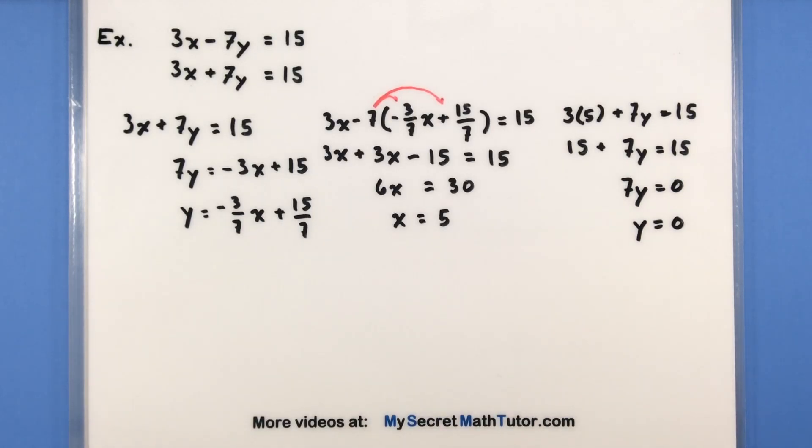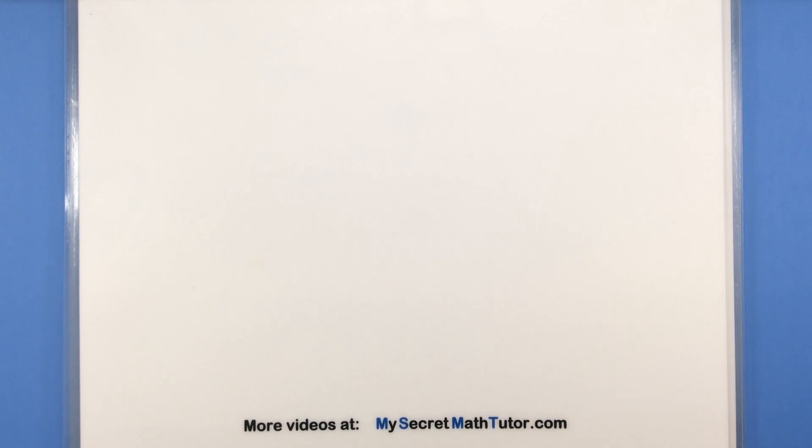As you can see, the process is nice and simple, pretty straightforward. You just have to go through the process of substituting and then solving for that remaining variable, and you should be good. If you'd like to see some more videos, please visit MySecretMathTutor.com.